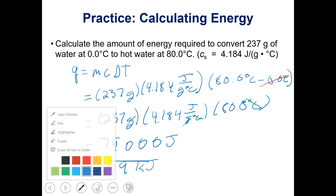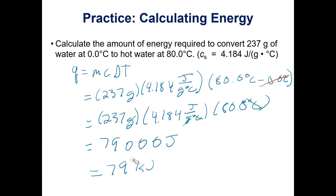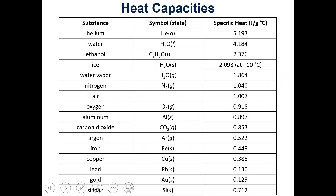Since you're not specifically asked for kilojoules, either joules or kilojoules would be acceptable. There is also a table of different heat capacities for different substances — usually in the appendix of your book. If a problem asks for heat, mass, or change in temperature but doesn't give you a specific heat, you can look up the substance in that table.